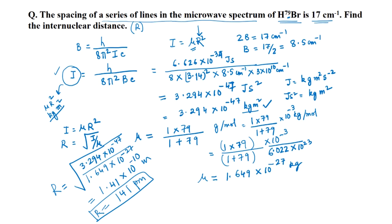We should remember that in the last class we found the bond length of HCl to be 127 pm. Today we found the bond length of HBr to be 141 pm. From rotational data we can find accurate bond lengths, and as expected, the bond length of HBr is larger than that of HCl.